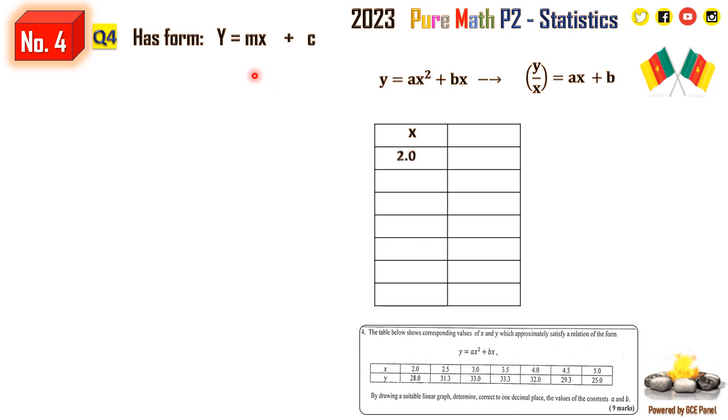These are the x values that we are given: 2.0, 2.5, 3.0, 3.5, 4.0, 4.5, and 5.